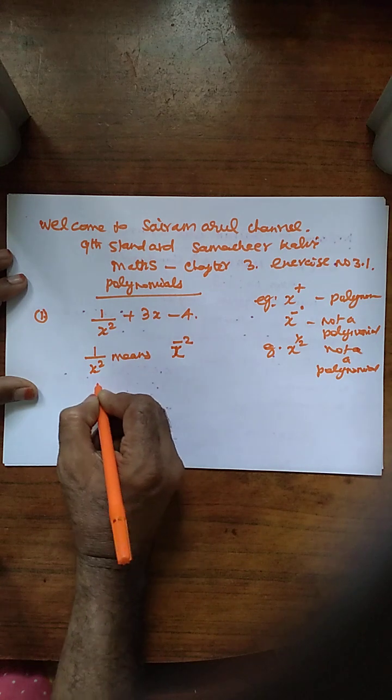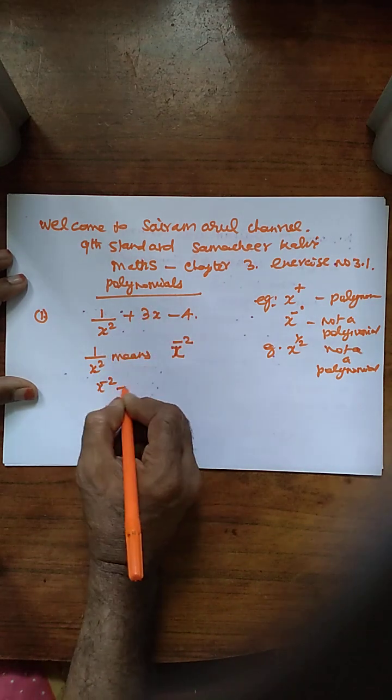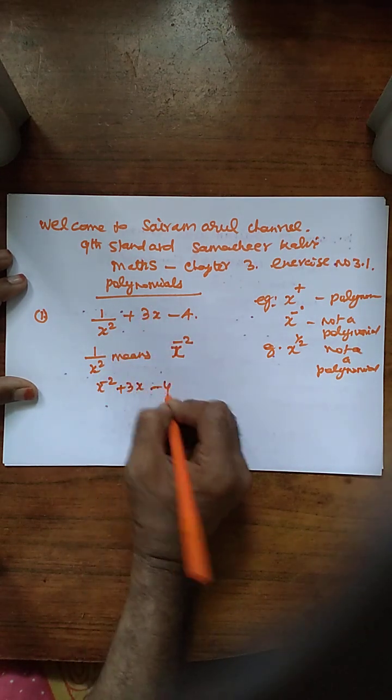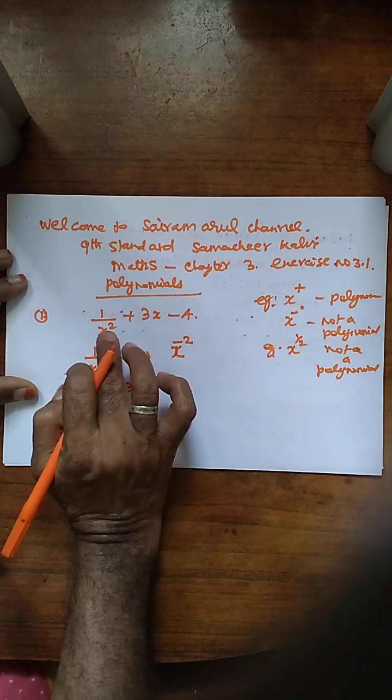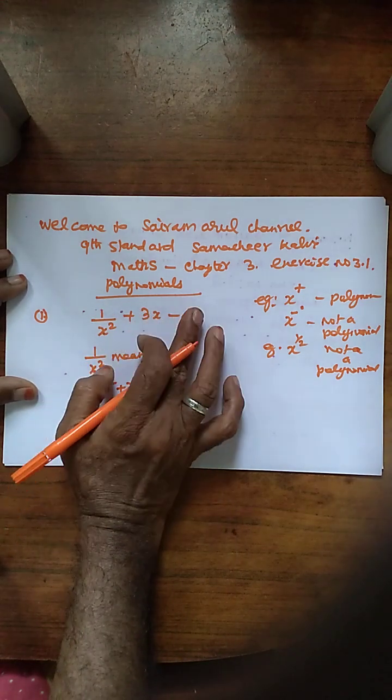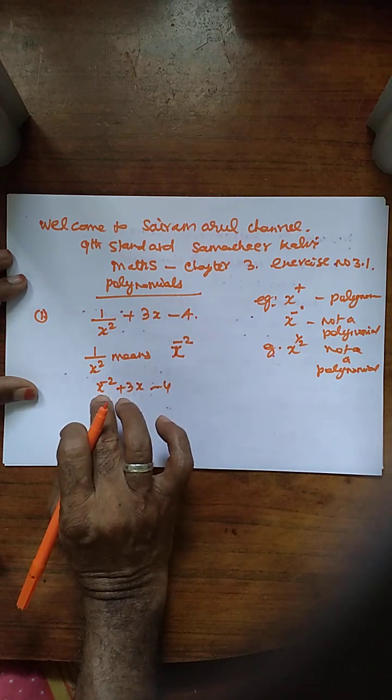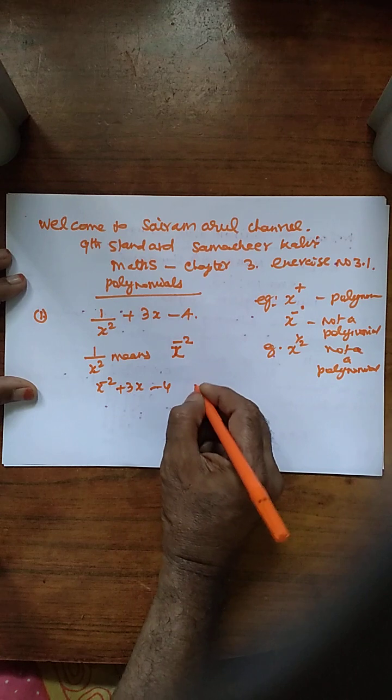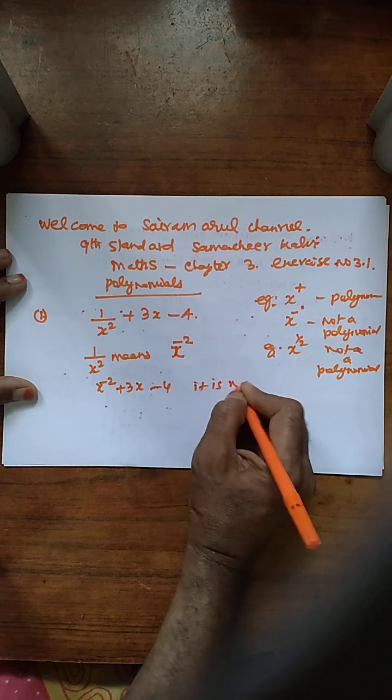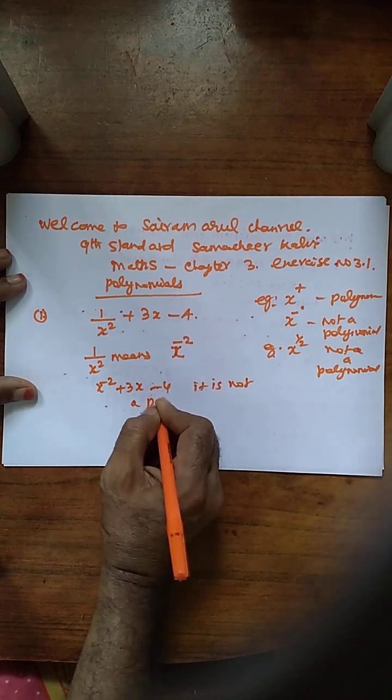So x power minus 2 plus 3x minus 4 rearranged to this model. 1 by x squared plus 3x minus 4 is rearranged to x power minus 2 plus 3x minus 4. It is not a polynomial.